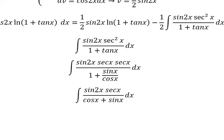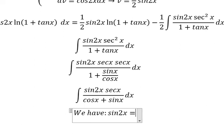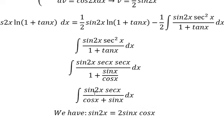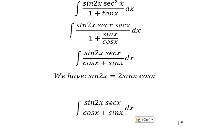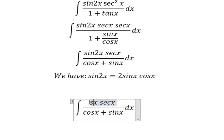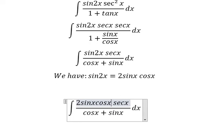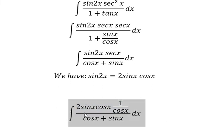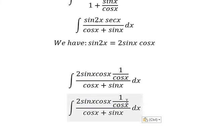For the next one, we have sin(2x) equals cos x times cos x. So I will put cos x in here. And sec x equals 1 over cos x. Now we can simplify.